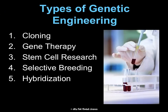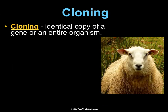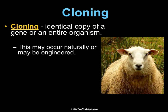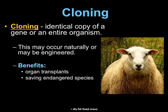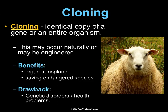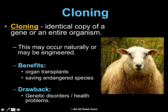We're going to talk through five types of genetic engineering and the benefits and drawbacks of each. First is cloning. This is where we take an identical copy of a gene or an entire organism and make an identical copy. This can occur naturally or it can be engineered — mitosis makes identical cells, but we're talking more about engineered cloning. Benefits include organ transplants and saving endangered species. Drawbacks are genetic disorders and health problems, which we saw in the first cloned organism, Dolly the sheep.